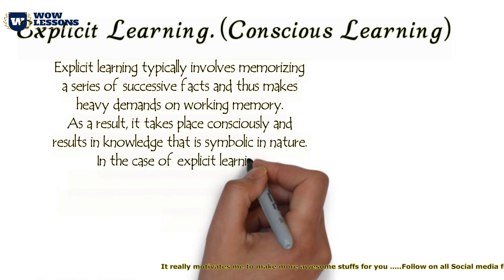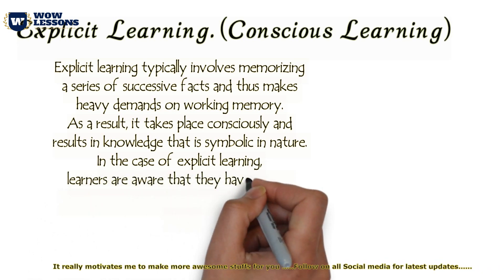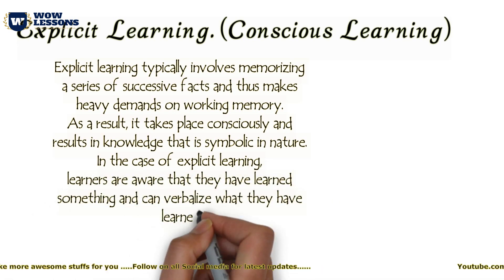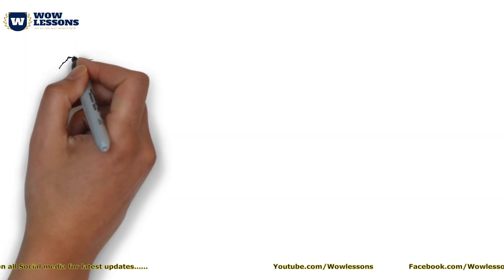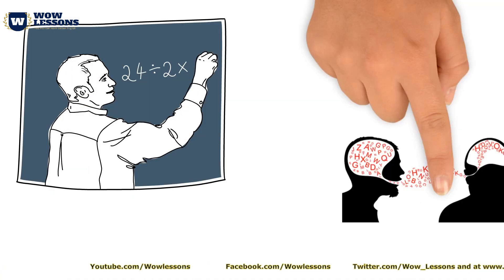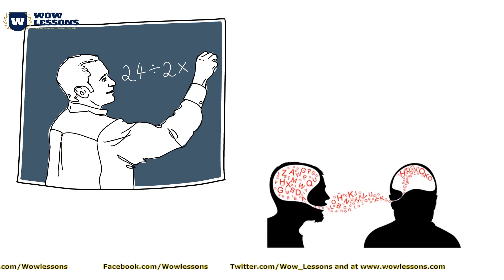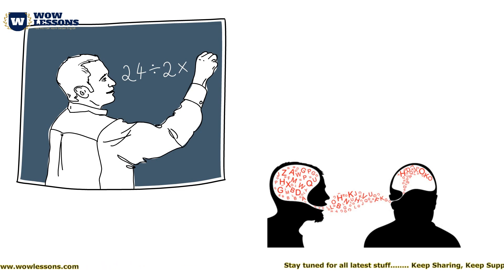In the case of explicit learning, learners are aware that they have learned something and can verbalize what they have learned. As an example, explicit learning can be very helpful. When someone explains the grammar rules to you, you learn the rules explicitly by consciously memorizing them.